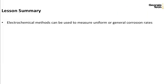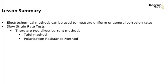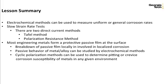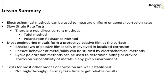So what we have learned from these two parts of corrosion testing module are that we can use electrochemical methods to measure uniform or general corrosion rates. We have learned that there are two different electrochemical methods which can be used for corrosion measurement, Tafel method and polarization resistance method. We also learned that most engineering metals form a protective passive film at the surface. If film breaks down, then that can lead to localized corrosion. Passive behavior of metal or alloy can be studied using this electrochemical method. So we use electrochemical method called cyclic polarization method to determine pitting or crevice corrosion susceptibility of these metals. Test methods for other modes are also available and are well established, but they are not high throughput. They may take time to get reliable results. Thank you.